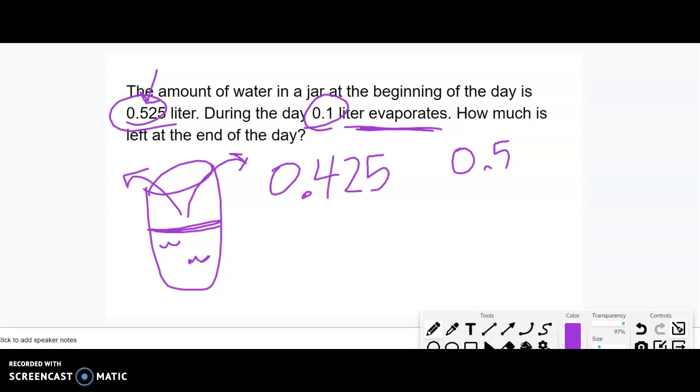Or, I could actually do the subtraction: 0.525 minus 0.100. That gives me 0.425. So, whether I conceptualize it or write it down, I'm going to get the same answer.